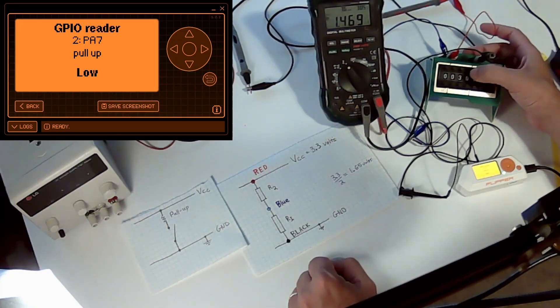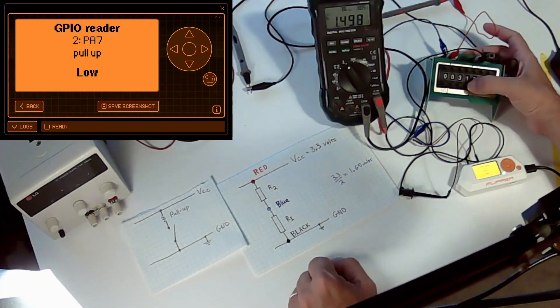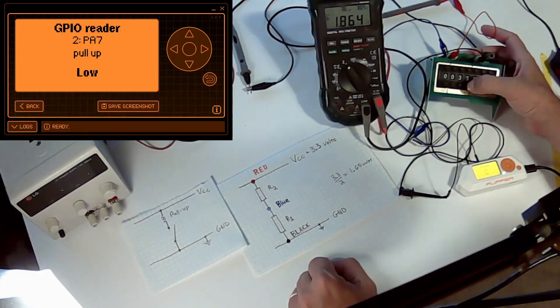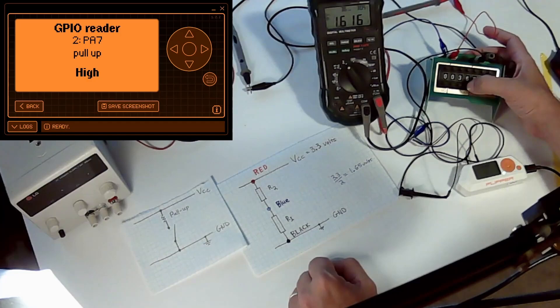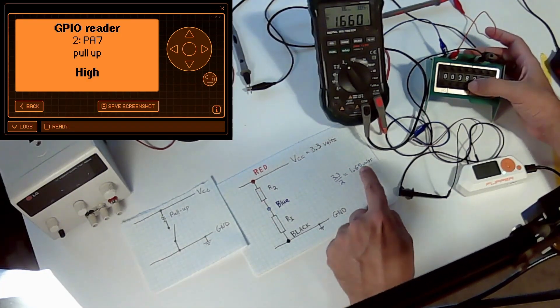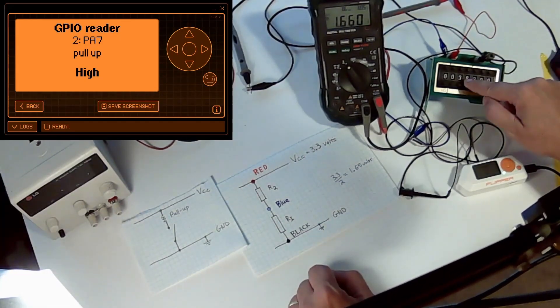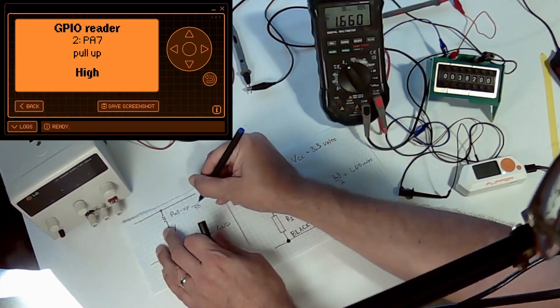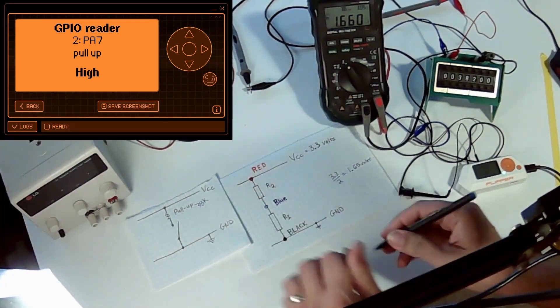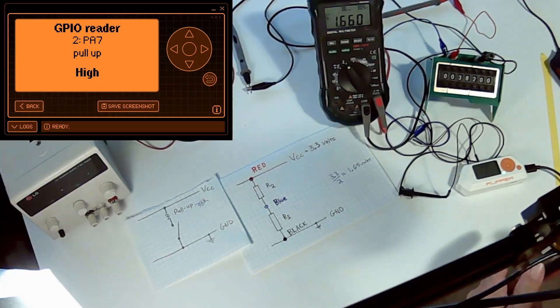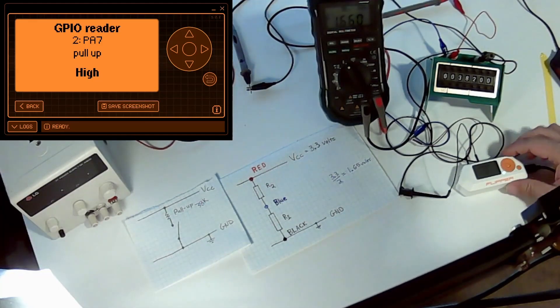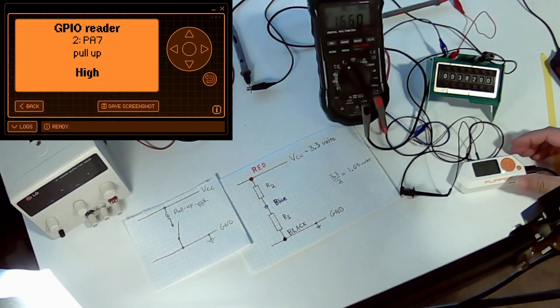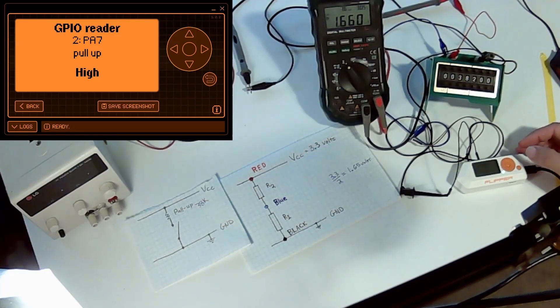So 1 point... And there we go. We're at 1.65 volts and it's a 38k pull-up. So 38k is our value for the pull-up resistor on the Flipper. So now let's go ahead and we'll take this apart.